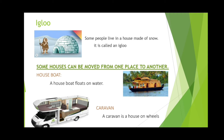Some houses can be moved from one place to another. The houses we have seen so far — bungalows, apartments, huts, and igloos — cannot be moved; they are fixed in one place. Now we will see some houses that can be moved. The first one is a houseboat. See the picture, children — a houseboat is built on a boat and floats on water. It can be moved from one place to another.